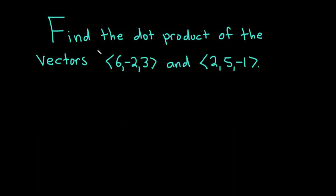In this video, we're going to find the dot product of the following vectors. The first one is the vector whose components are 6, negative 2, and 3. And the second one is the vector whose components are 2, 5, and negative 1.